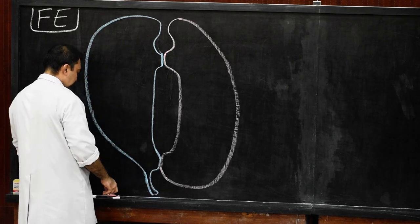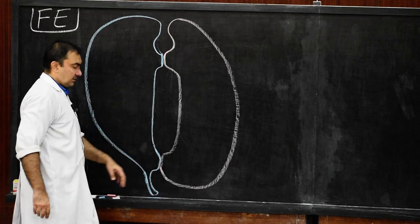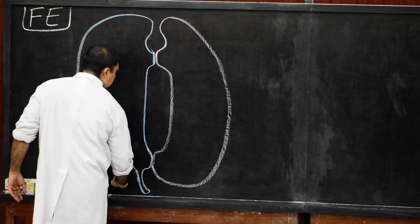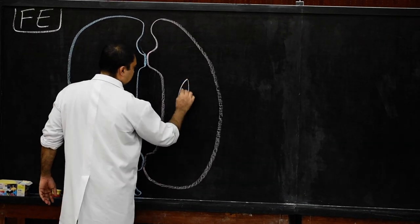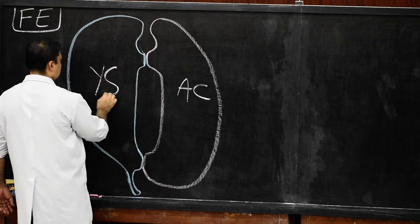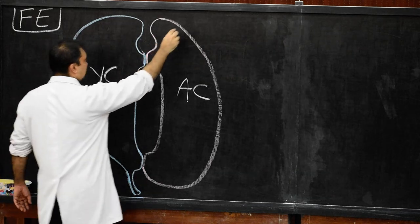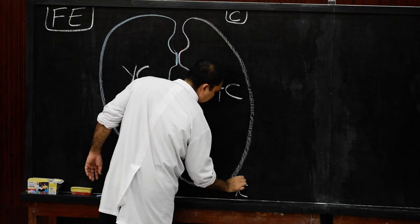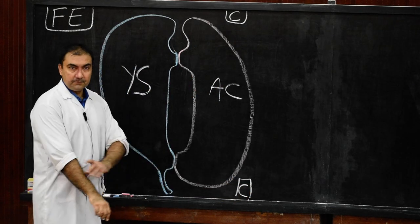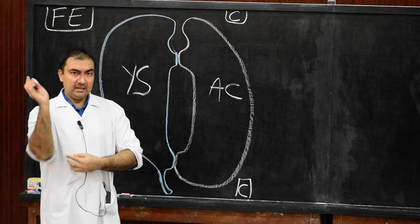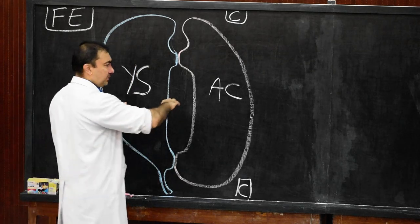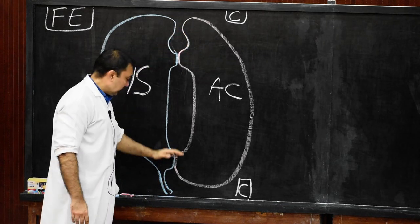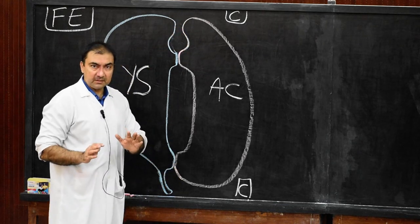The allantroenteric diverticulum is post the cloacal membrane. After completing these two cavities, we write down: amniotic cavity and yolk sac. The cephalic end is at the upper part and the caudal end is at the lower part — this is the sagittal section, very simple.